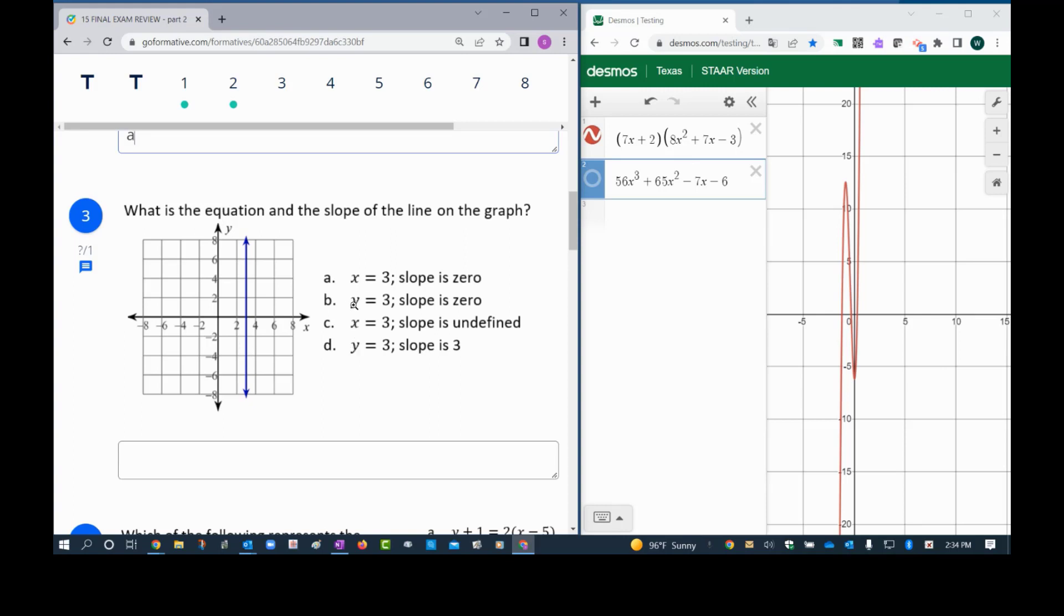Well, I see a vertical line. A vertical line means that it's going to be x by itself, so I can eliminate letter B and D. And anytime you have a line that is vertical that's undefined, so right there we have x equals 3 and the slope is undefined.